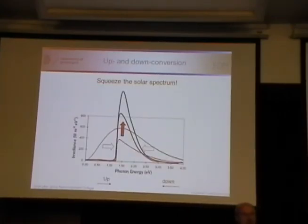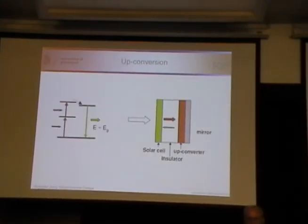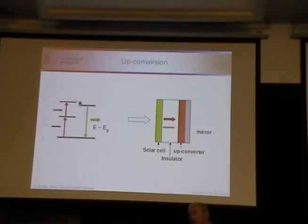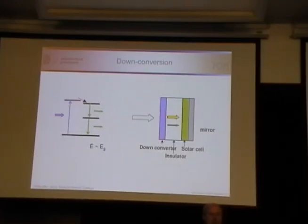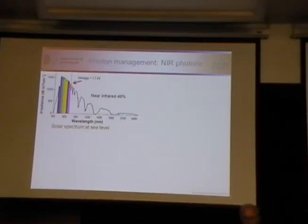Then we have up and down conversion. I'm not going to talk about down conversion — I'm going to talk about up conversion. Up conversion means simply adding two photons and hopefully getting a new photon out with the sum of the energies. You can put an up converter behind the solar cell, where low energy radiation goes through the cell, gets up converted, comes back with a mirror, and is then absorbed and converted to electricity. Down conversion you put in front, to cut high energy photons into two lower energy ones suitable for your bandgap.